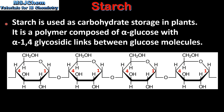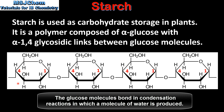Starch is used as carbohydrate storage in plants. It is a polymer composed of alpha glucose with alpha 1,4 glycosidic links between the glucose molecules. Here we have a section of a starch molecule. The monomers are alpha glucose molecules and they are joined by alpha 1,4 glycosidic links between carbon number 1 and carbon number 4 of the glucose molecules.